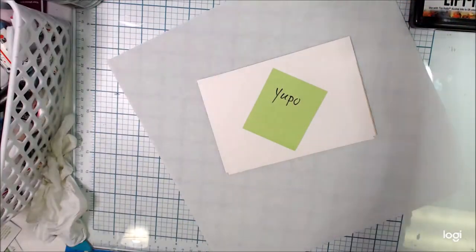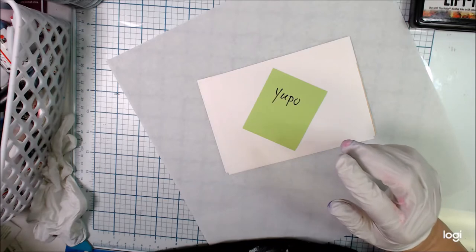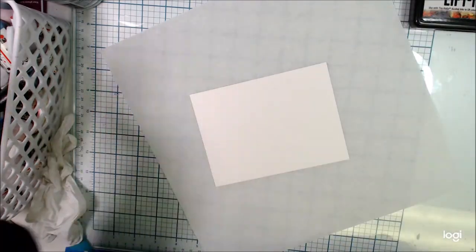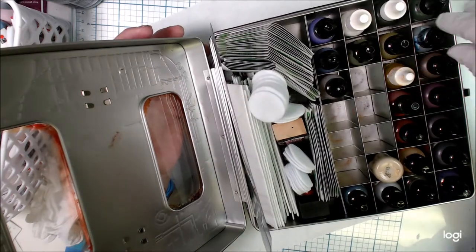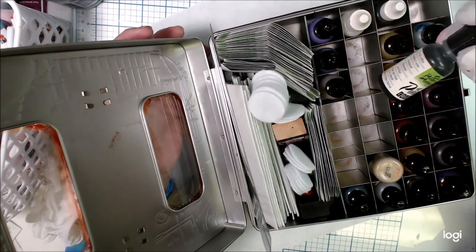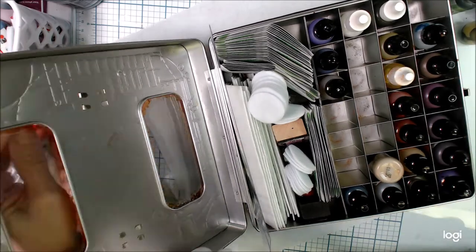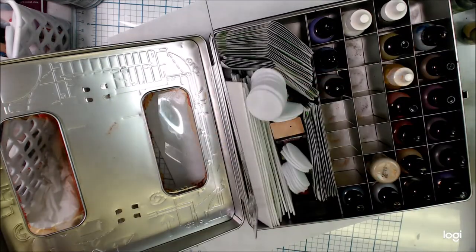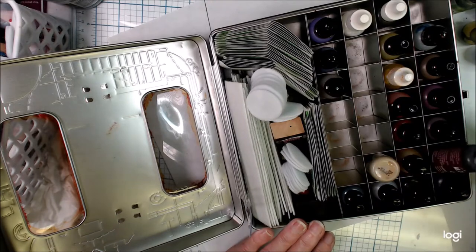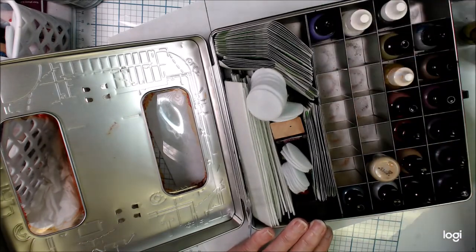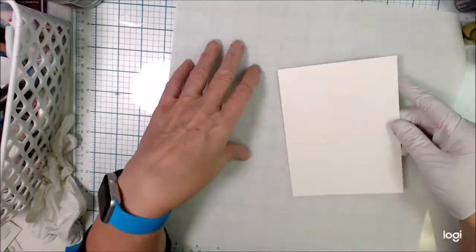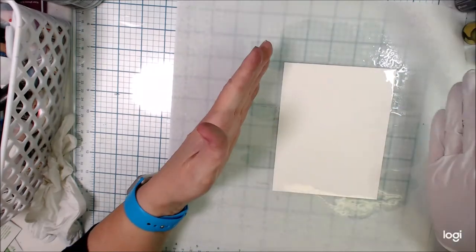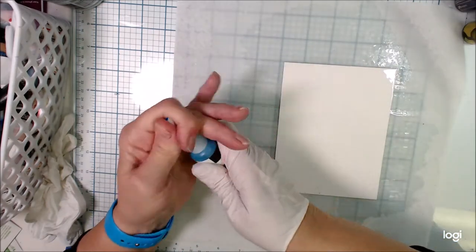With a piece of Yupo paper we're going to start applying some alcohol inks and I have an assortment. I have several different brands. I have some Maraboo, I have some Ranger, I have some Pinatas, I have the Copic. There's any number of these alcohol inks out on the market and you may already have some in your stash. Use what you have. Don't go out and buy something unless you really feel like you have to have a specific color or something.